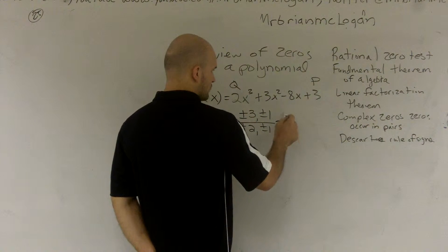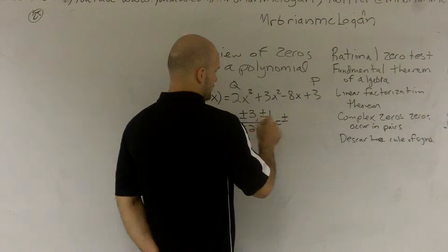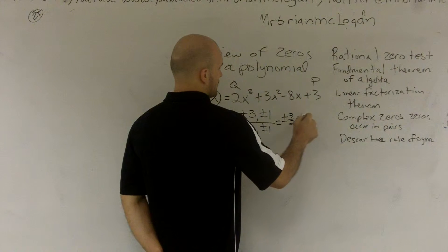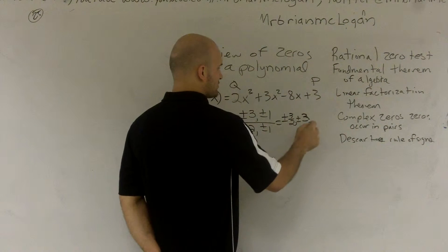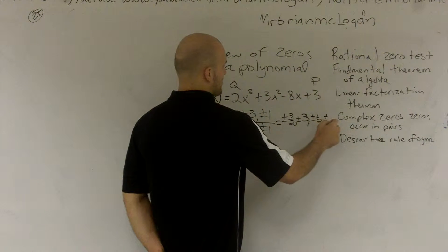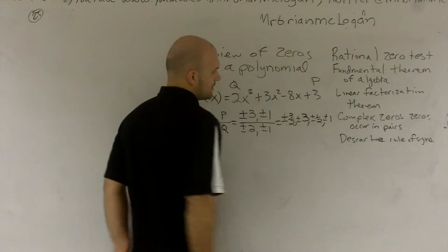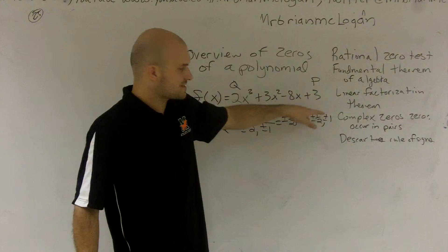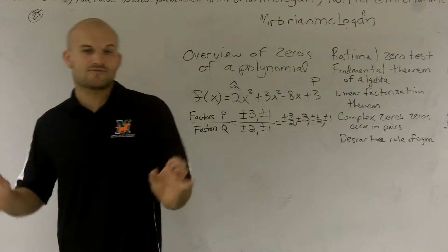Therefore, giving me a total list of factors which will be plus or minus 3/2, plus or minus 3, plus or minus 1/2, and plus or minus 1. So I have a total of eight possible rational factors.